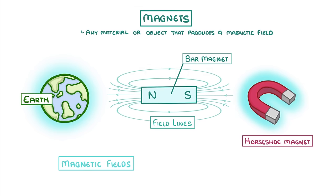What all magnets have in common though is that they have two poles, a north and a south, and they're surrounded by a magnetic field. In order to properly represent these magnetic fields, we use something called field lines, which